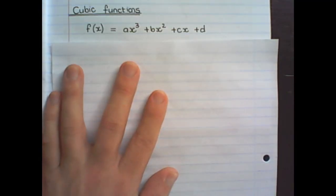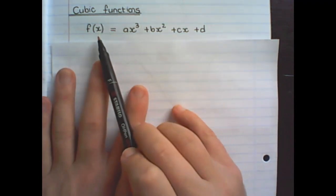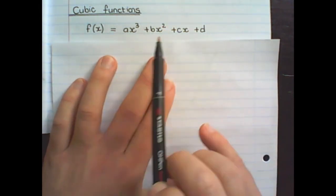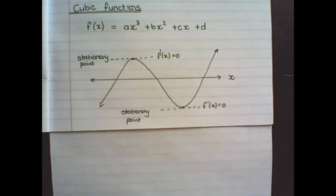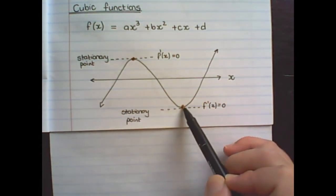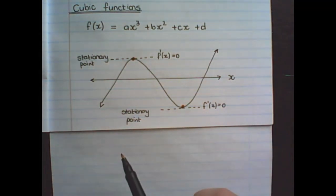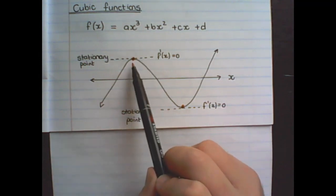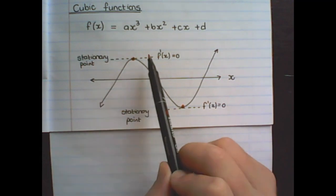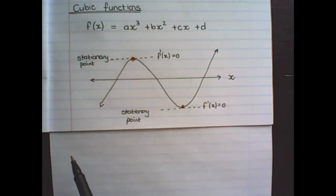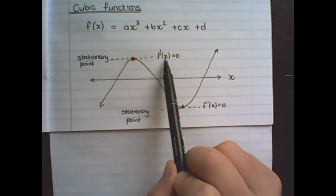Let us move on to cubic functions. The standard formula for a cubic function is f(x) equals ax cubed plus bx squared plus cx plus d. Here I've drawn a possible cubic function, and what we need to learn is that this cubic function has two turning points. We are no longer going to refer to turning points but rather call them stationary points. They have the same characteristic as a turning point of a parabola where the gradient at the stationary point is equal to zero, and therefore the derivative at the stationary point is also equal to zero.